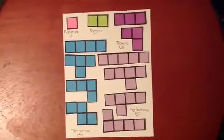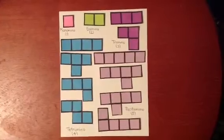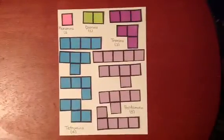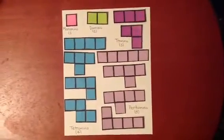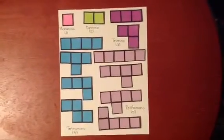This video is about polynomials. A polynomial is defined as a plane geometric figure formed by joining one or more equal squares edge to edge. It is a polyform whose cells are squares. These are polynomials.